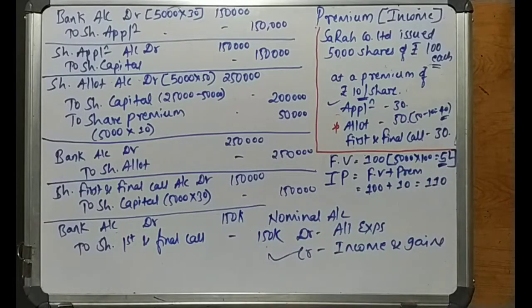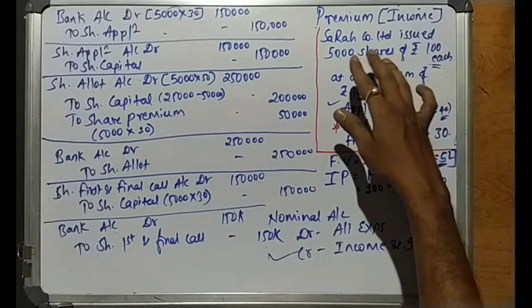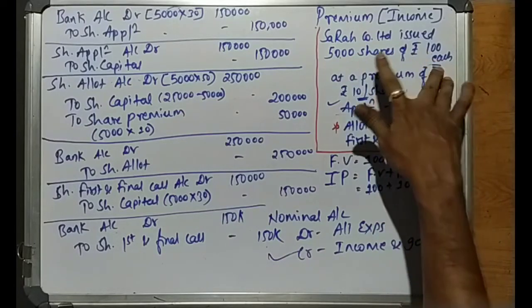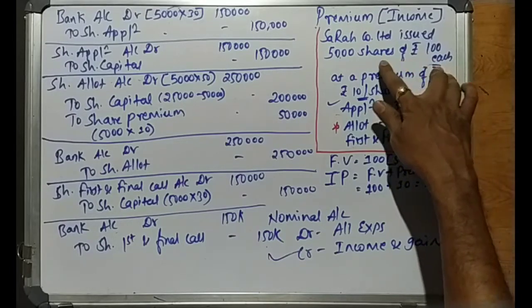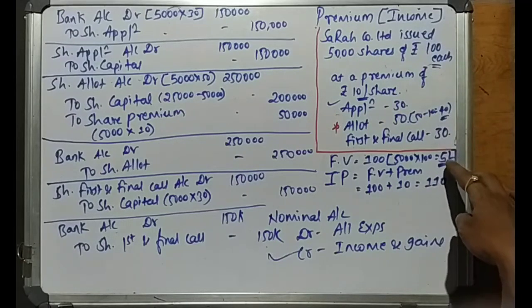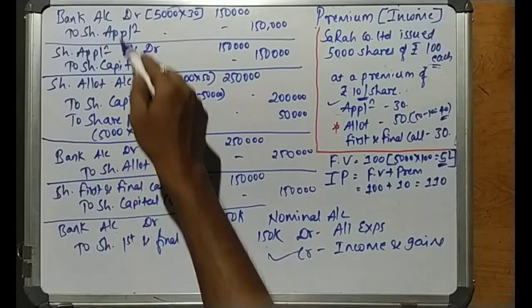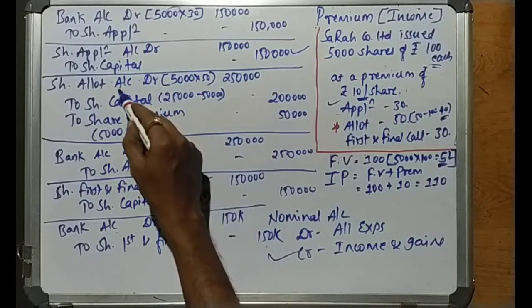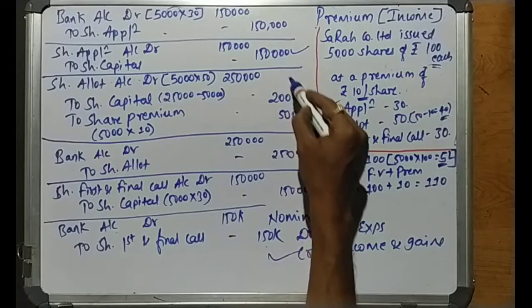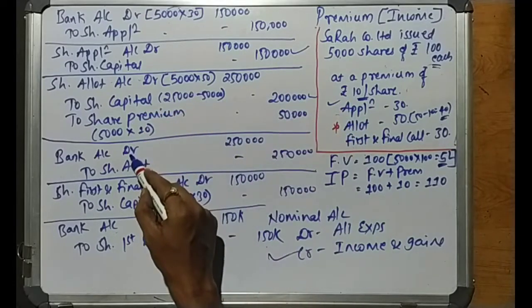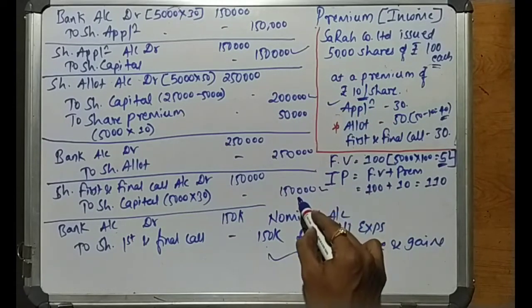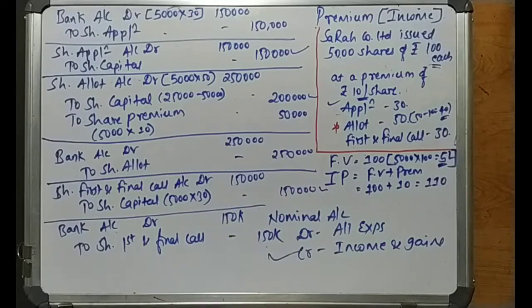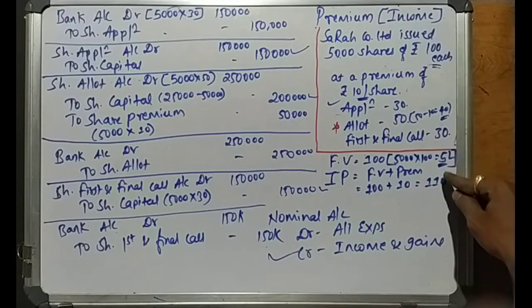To cross-check the capital account: all companies have 5,000 shares of rupees 100 each, so total share capital should be rupees 5,00,000. Share capital from application is 1,50,000; from allotment 2,00,000; from first and final call 1,50,000. So 1,50,000 plus 2,00,000 is 3,50,000, and 3,50,000 plus 1,50,000 is 5,00,000. The capital account total is correct.